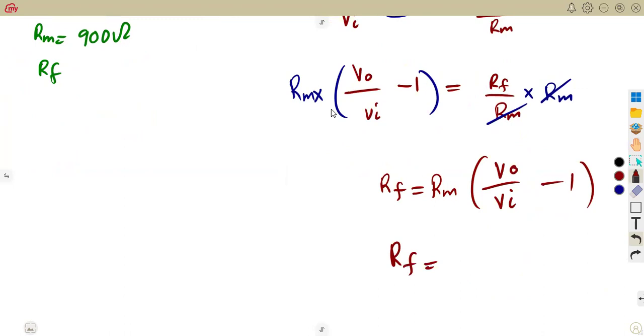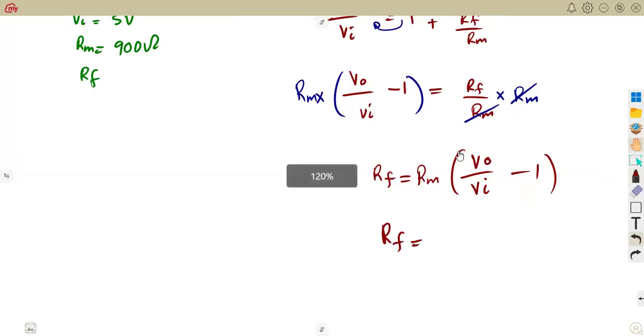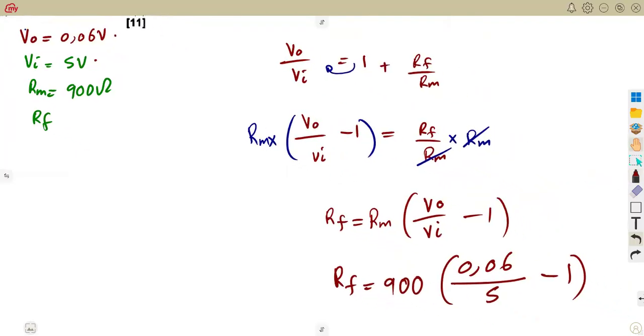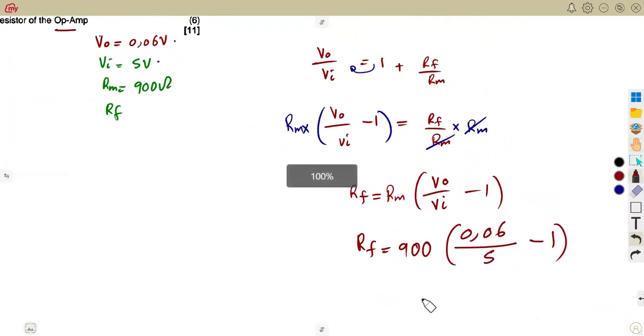So as long as you take your information properly, you're not going to have a challenge. Let us consider that one and work with more questions. Sometimes those questions, you have to be very careful also. So that is the 900 there. VOUT over VIN, 0.06 over VIN, which is 5 minus 1. We're just going to substitute as we are given our values there. So that was going to give us the value of the feedback resistor. And this was going to give us a negative 889.2 ohms. That was going to be a negative. It is because of this part of our voltage. But according to their presentation, that is how it was supposed to be like.